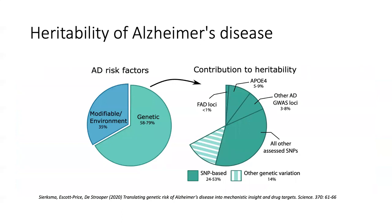Just to remind you: looking at the overall heritability of Alzheimer's disease, APOE is a strong predictor accounting for between 5 and 9%. Other genome-wide significant loci account for 3 to 8%. In addition to APOE, we have a number of other genetic variations, and there is no consistent evidence in the field yet about how much other genetic variation is explained by common SNPs. Some studies show about 10%, some studies show up to 20, 30, or 40%. It depends on the sample, and perhaps the aging component can in fact explain these differences.